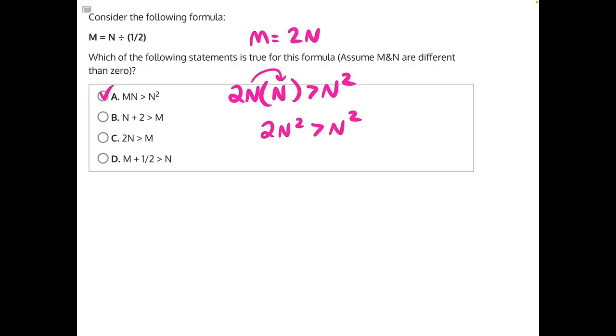For answer choice B, we have N plus 2 is greater than M, which is 2N. Then, if we were to subtract N from both sides, these would cancel, leaving us with 2 is greater than N. We can't know for sure if this is true or not because we don't have the value of N. So, answer choice B is incorrect. We cannot prove it true or false.